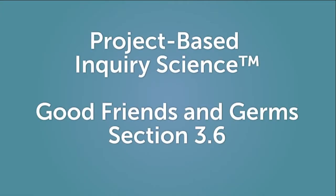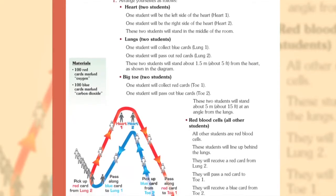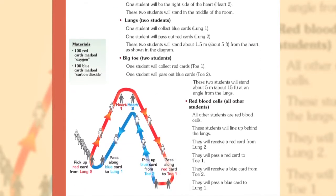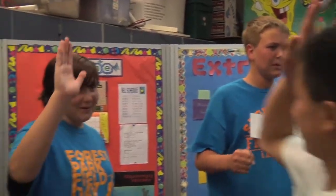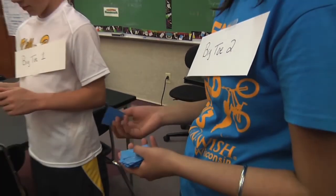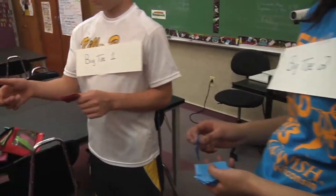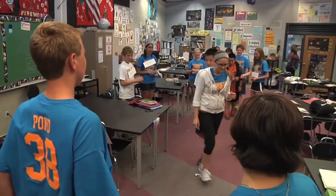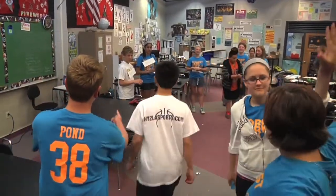3.6 is another investigation: how does the circulatory system work? In this simulation, students simulate blood flow through the heart, the lungs, and to a big toe. We have two students that are the heart, two students that are the lungs, two big toes, and the rest of the students are red blood cells. As they pass by different areas, they pick up an oxygen card or a carbon dioxide card to show how blood flows, how it gets rid of carbon dioxide, and picks up oxygen.